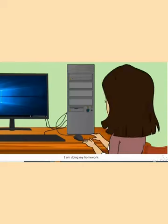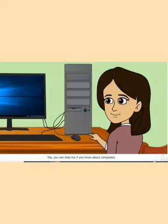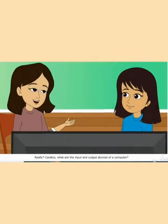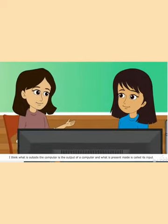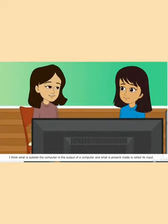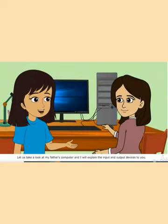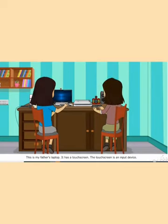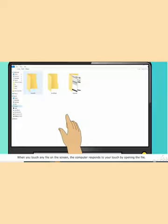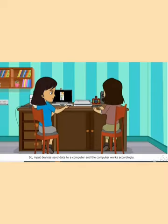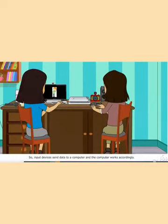In the animation, one character asks another what she is doing. She replies she is doing homework and asks for help. The helper says computer science is one of her favorite subjects. When asked about input and output devices, one character guesses that what is outside the computer is output and what is inside is input. The other corrects her: input devices send data to a computer and the computer works accordingly.